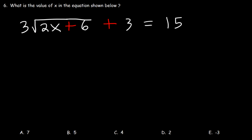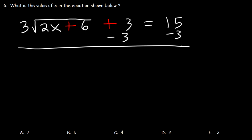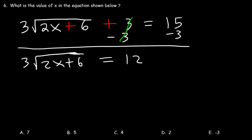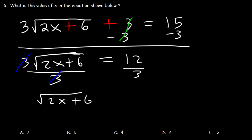Number 6. What is the value of x in the equation shown below? The first thing we need to do is subtract both sides by 3, so we're going to have 3 square root of 2x plus 6 equal to 15 minus 3, which is 12. Now, before we take the square root of both sides, the best thing we should do is divide by 3 to get rid of the number in front of the radical. Then let's take the square of both sides to get rid of the radical on the left.